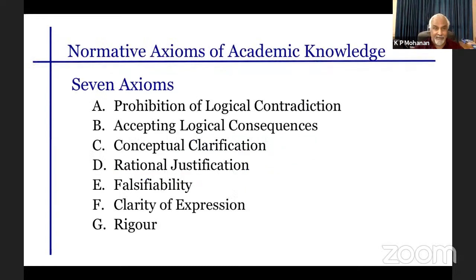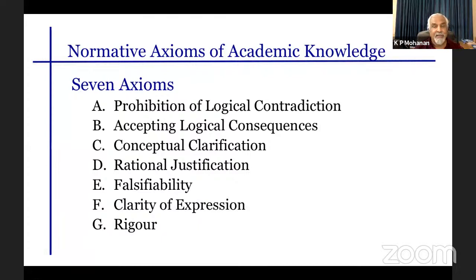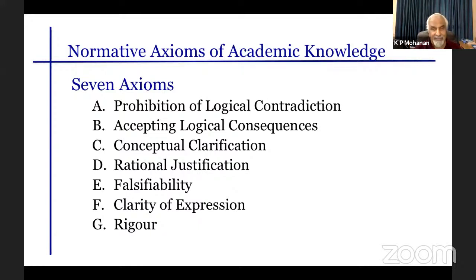I want to discuss seven axioms of academic knowledge. The first, the central axiom, is the prohibition of logical contradiction. The second is accepting logical consequences. Third is conceptual clarification. Fourth is rational justification. Fifth, falsifiability. Sixth, clarity of thinking and expression. And finally, rigor. These are the central requirements of academic knowledge.